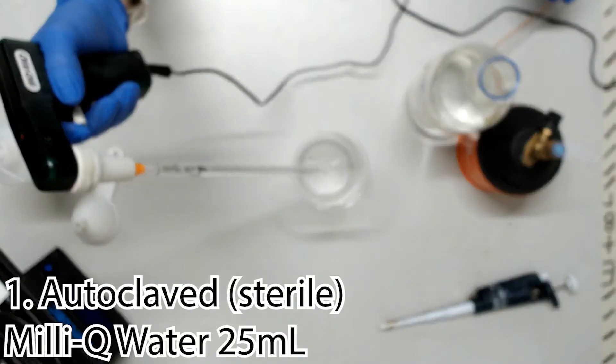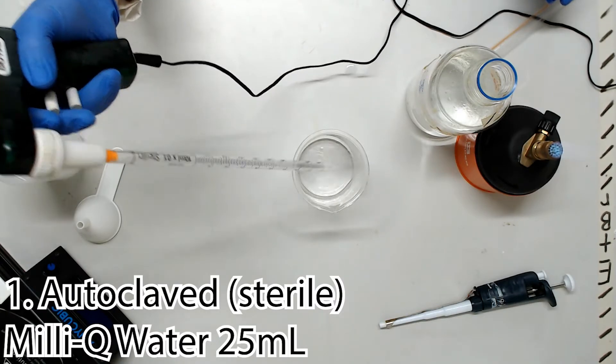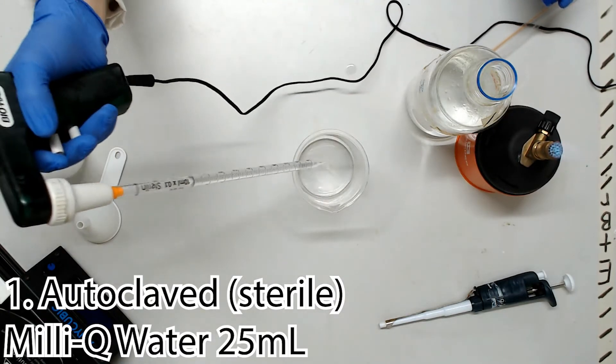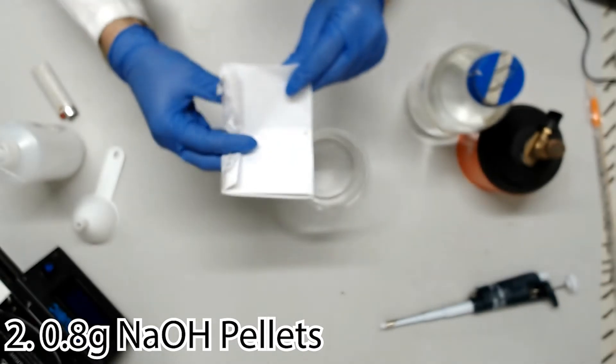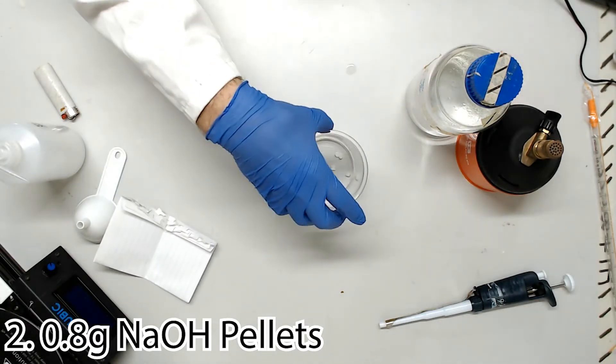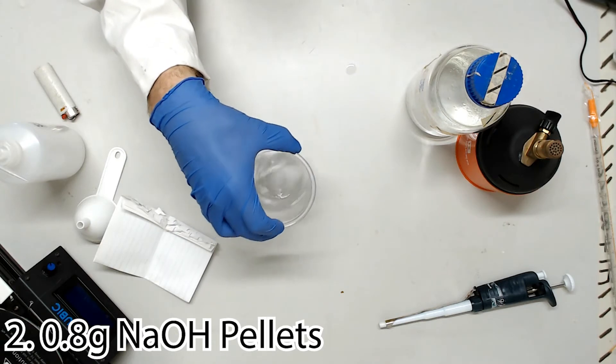We will start with about 25 mils of sterile purified water in a clean beaker, to which we will add 0.8 grams of sodium hydroxide pellets, mixing slowly to allow them to dissolve. This will take a bit of time.